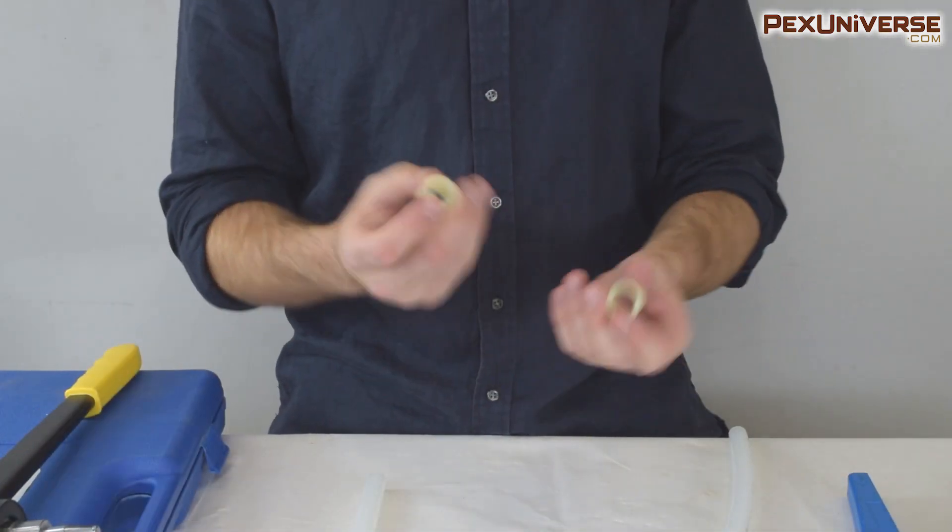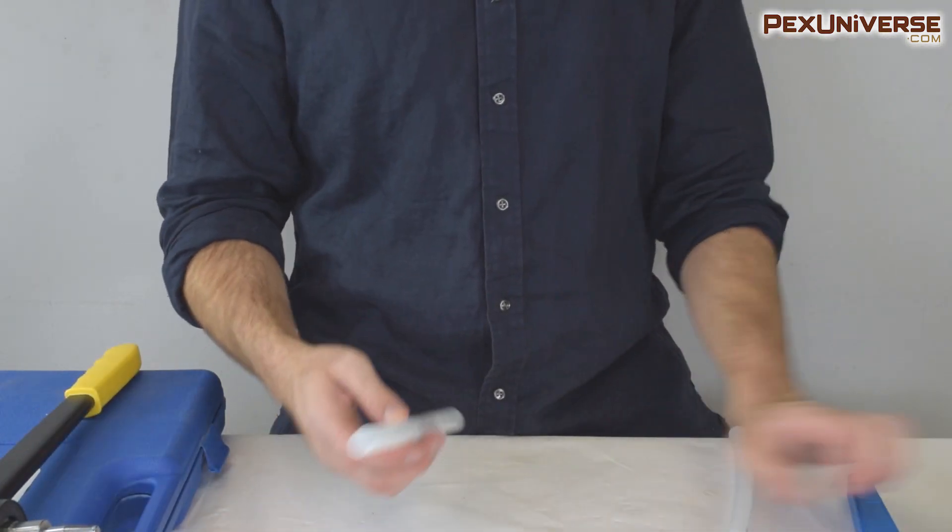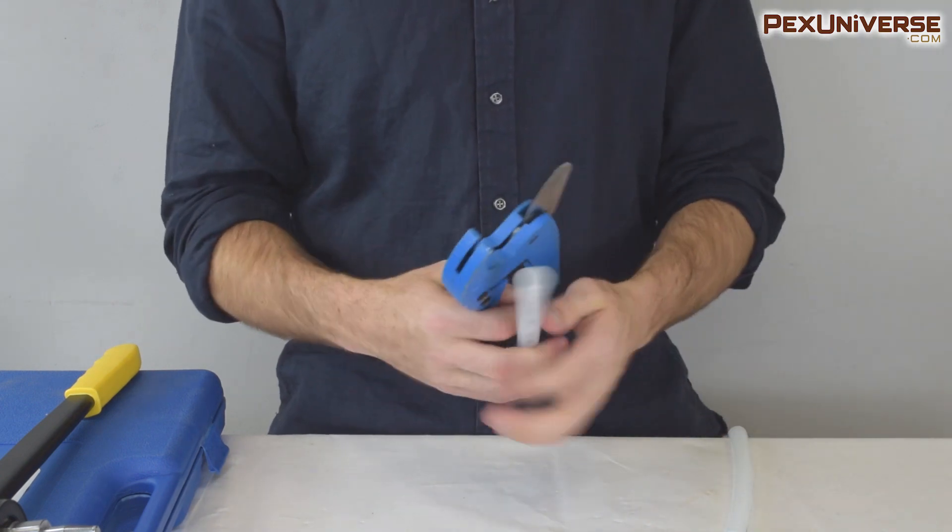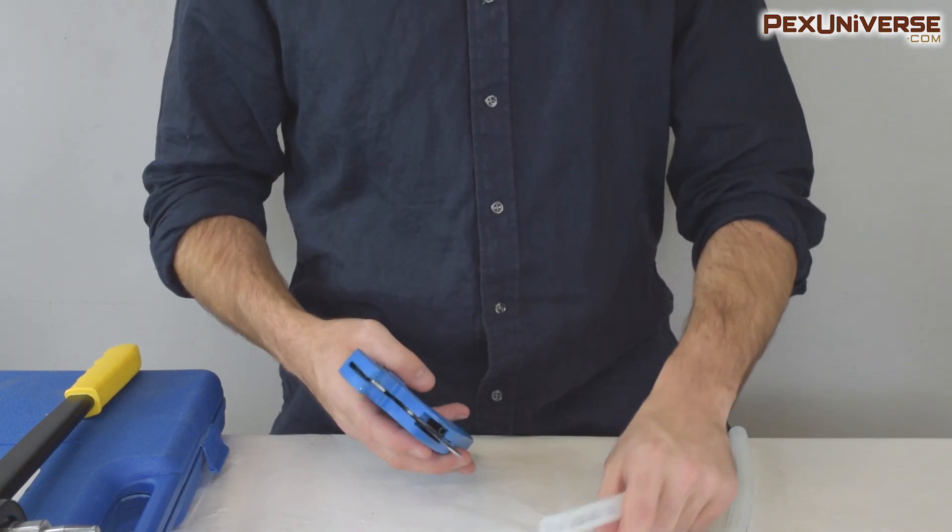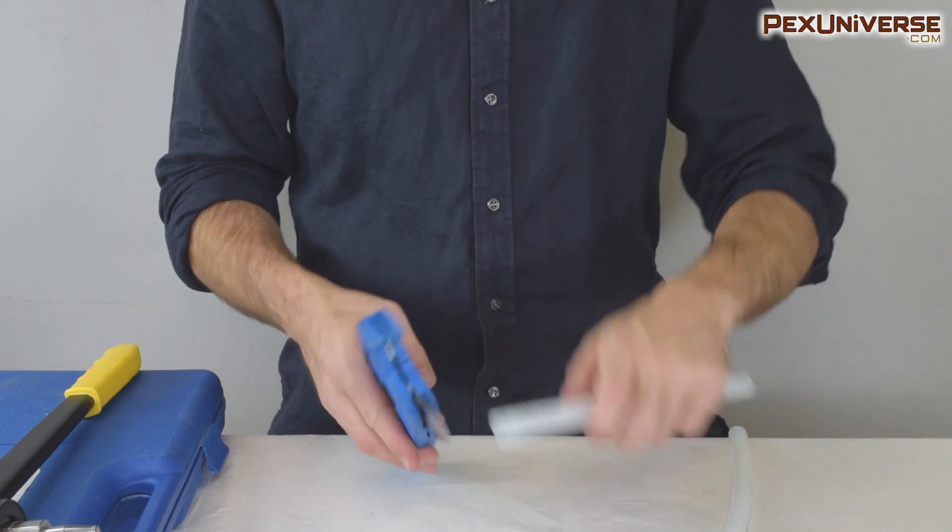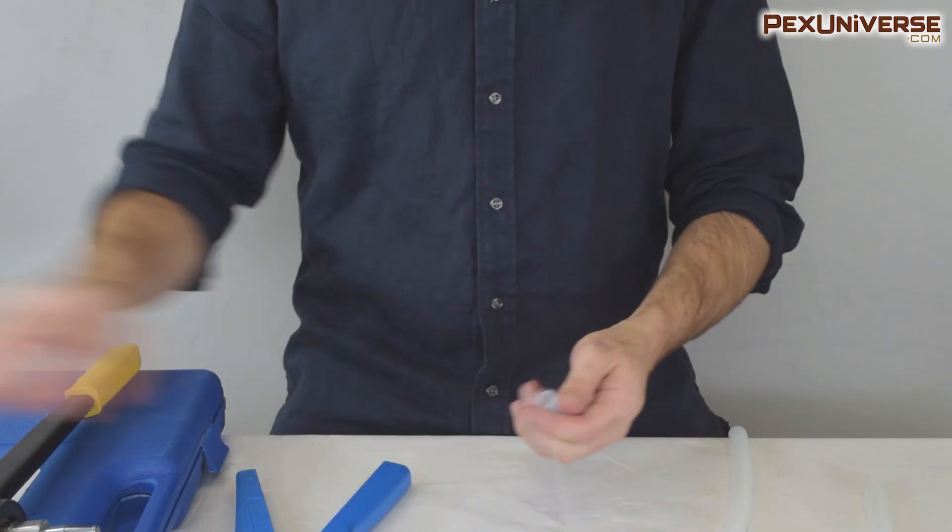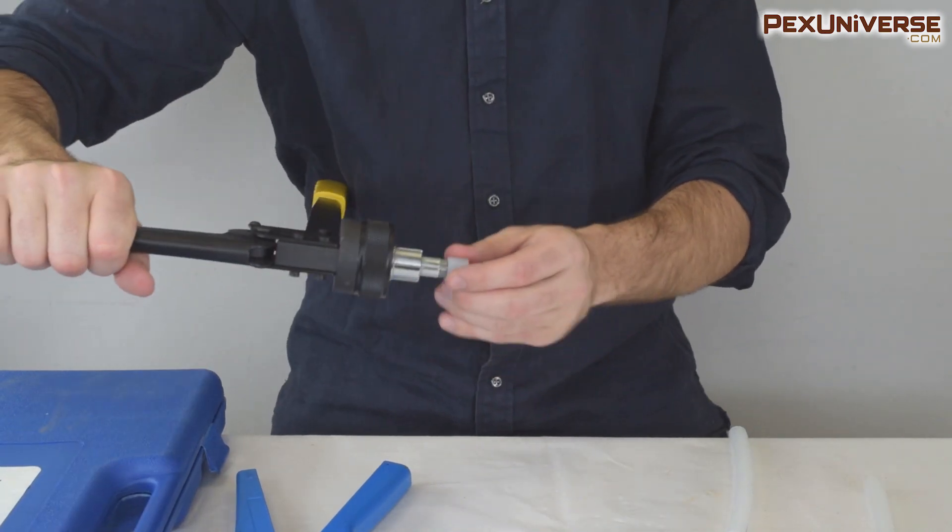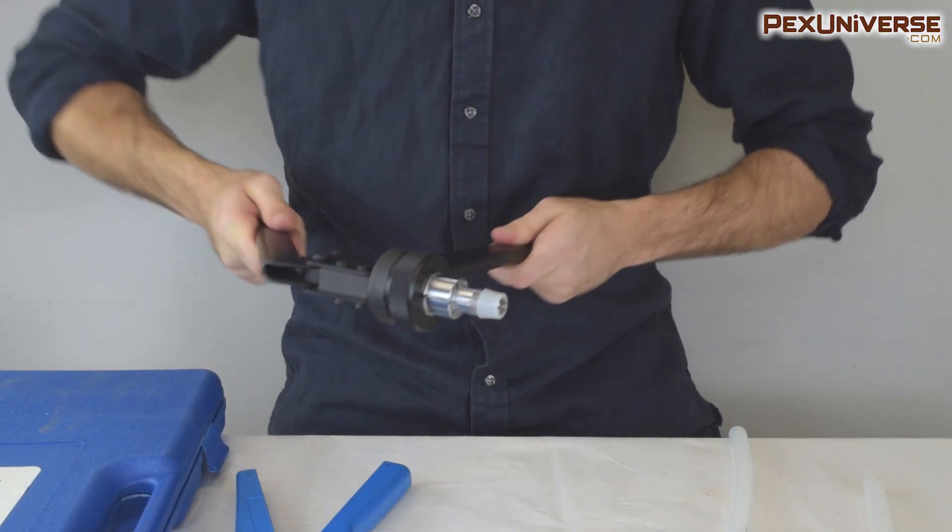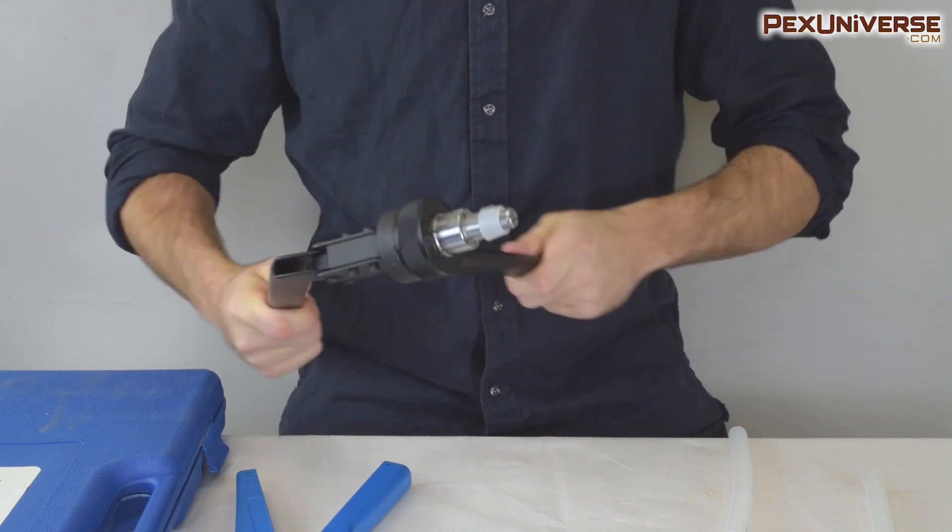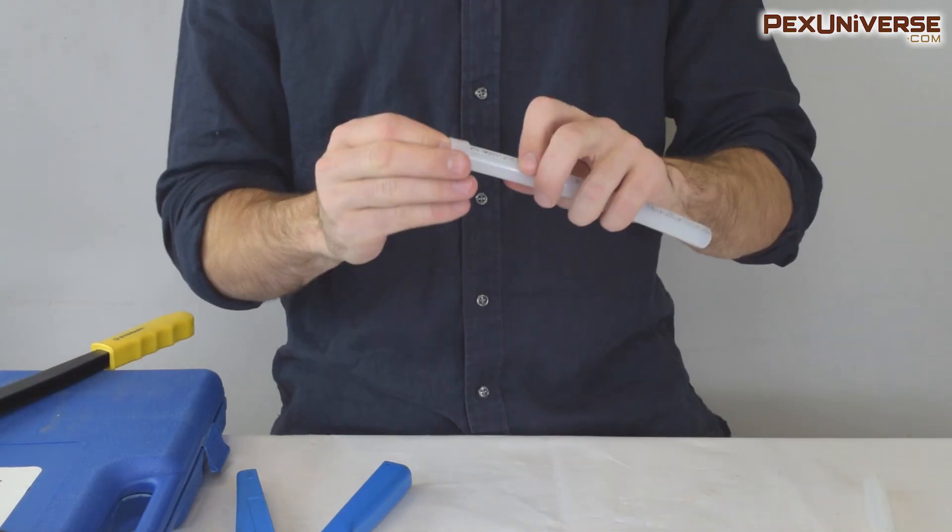If you don't have your own rings on hand, I'll show you how to make your own. Just take your PEX cutting tool and cut it to about this width. Then expand it and place it on the tube.